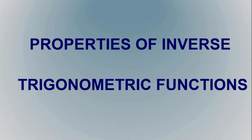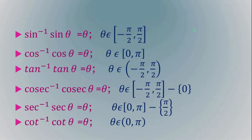Today I will discuss the properties of inverse trigonometric functions. As explained earlier, sin⁻¹(sin θ) can be written as θ, but θ should be within the principal value branch. For different inverse trigonometric functions, the principal value branch is different, so that you have to take care of.